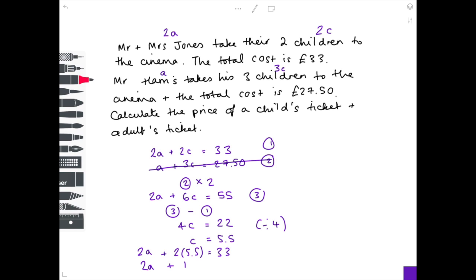2A plus 11 equals 33. Therefore, 2A equals 22. We divide by 2 to make sure that A is by itself, so A equals 11.